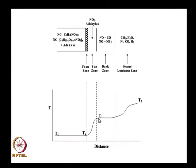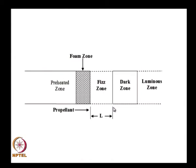This dark zone exists only for pressures less than around 10 MPa or 100 atmospheres; at higher pressures the temperature directly goes to Tf. To translate this into the burn rate, we looked at the preheated zone, foam zone, fizz zone, dark zone, and luminous zone.